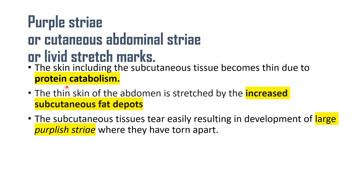The reason purple striae occur is due to the combined effect of protein catabolism and excess fat accumulation in the subcutaneous tissue. Glucocorticoids break down protein, and since the skin is made up mainly of collagen protein, when cortisol breaks down protein, it also affects the skin. The skin, including the subcutaneous tissue, becomes thin due to protein catabolism. The subcutaneous tissue is made up of fat, nerves, blood vessels, and protein, so it also becomes thin and weak due to increased protein catabolism.